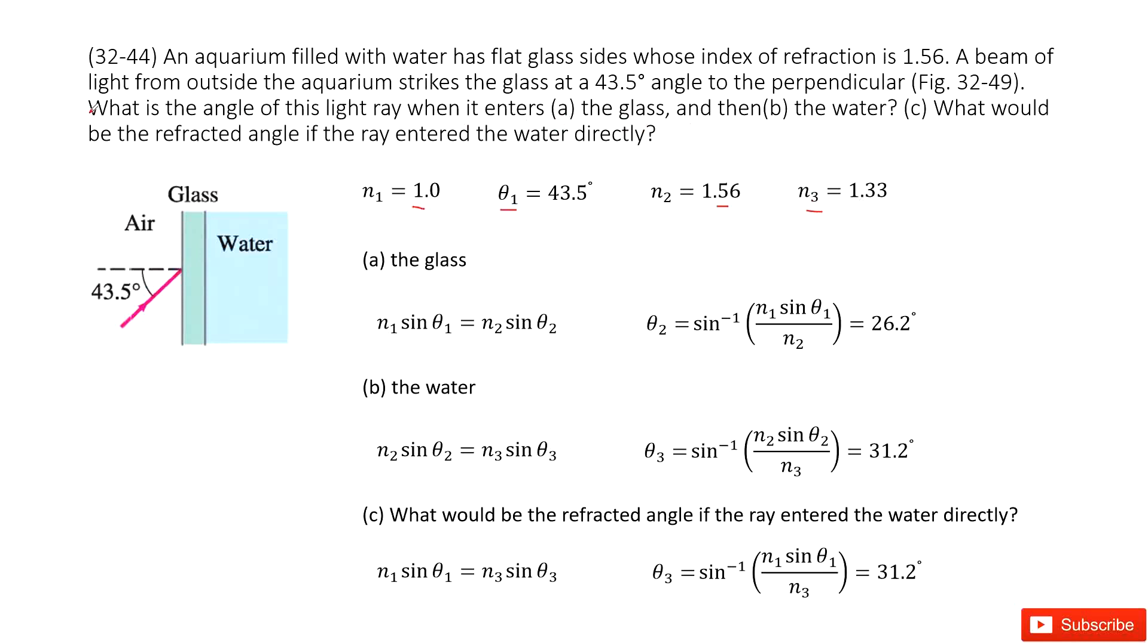First, we need to find the angle of this light when it enters the glass. That means we need to find the refraction angle. We can write down Snell's equation. At this part, incident is n1 sine theta 1 and refraction is n2 sine theta 2.